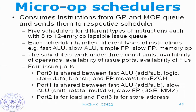The next stage is micro-scheduling, which consumes instructions from the general-purpose and memory op queues and sends them to five respective schedulers, each with eight to twelve entry collapsible issue queues. Schedulers work under three constraints: availability of operands, availability of issue ports, and availability of functional units. There are four issue ports in Pentium 4. Port 0 is shared between fast ALU, floating-point move, store, and floating-point exchange. Port 1 is shared between fast ALU and slow ALU — so there are two fast ALUs. The slow ALU does SSE and MMX. Port 2 is for loads and port 3 is for stores.